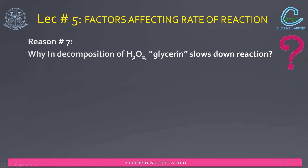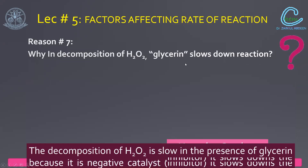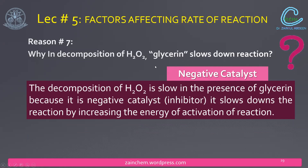Why does glycerin slow down the decomposition of hydrogen peroxide (H2O2)? The reason is that glycerin acts as a negative catalyst for this reaction. A negative catalyst provides an alternative longer path, increasing the activation energy. When the activation energy increases, the reaction slows down.